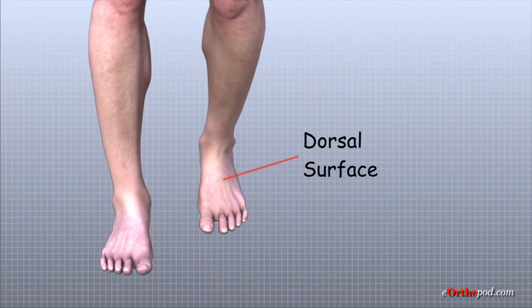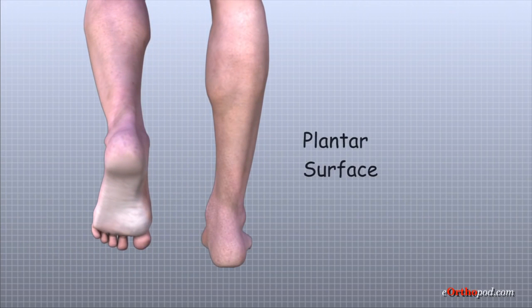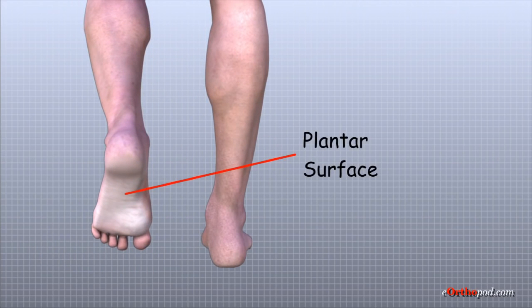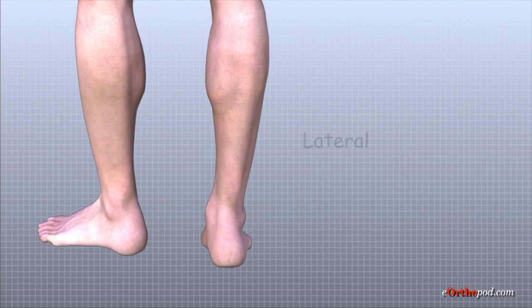The top of the foot is referred to as the dorsal surface. The sole of the foot is the plantar surface. The outside of the ankle is referred to as the lateral side.